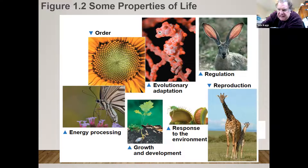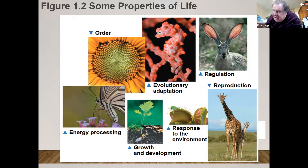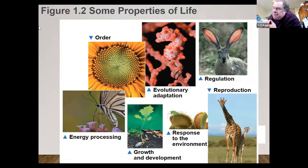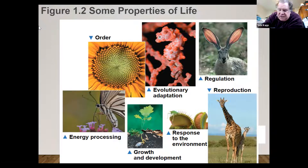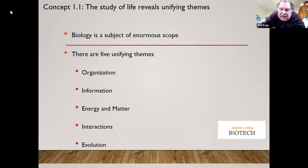There are seven characteristics of life that you're going to need to know. Life is ordered. Life has evolutionary adaptation. Life has regulation. Life has reproduction. Life has a response to the environment. Life has energy processing. And life has growth and development. Things change over time, so please go ahead and read the text and get a better understanding of these materials. I will give you an opportunity to talk about these materials a little bit on Friday. Your book covers these materials pretty well, and I talked about this more during lecture.